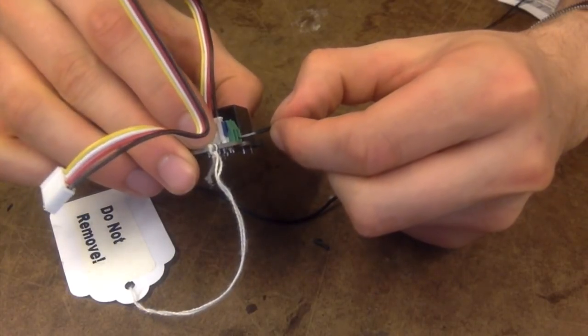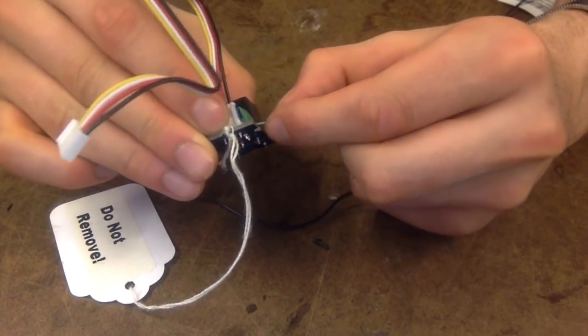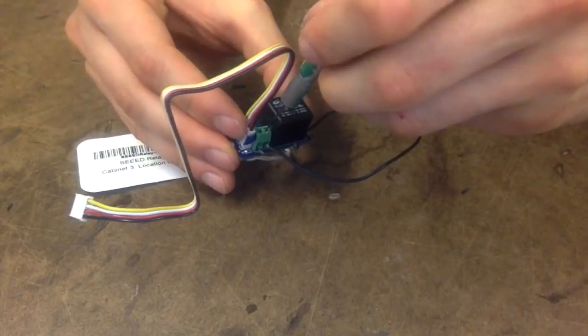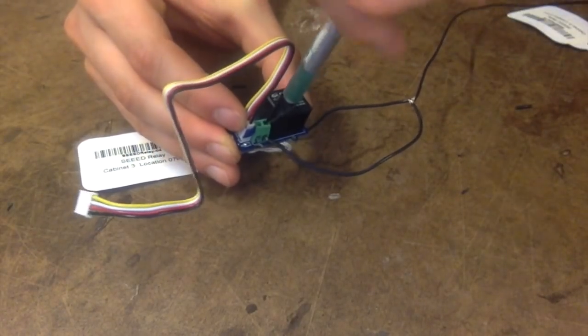To attach a wire to the relay, simply unscrew the top of the clamp, insert the wire, and tighten. I repeat this to wire the relays as shown in the diagram.